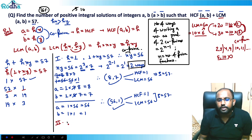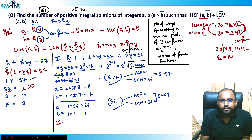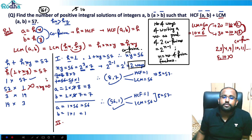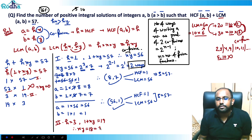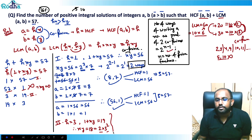So Case 2 (h = 57) is not possible since xy = 0 is invalid. Case 3: h = 3 and (1 + xy) = 19, so xy = 18 = 2 × 3². There are two prime factors, so 2^(2−1) = 2 ways again.